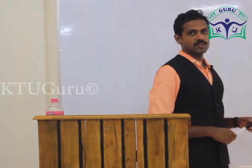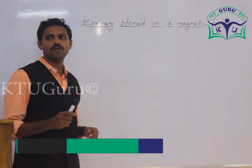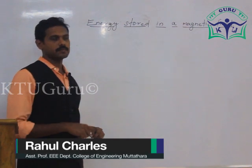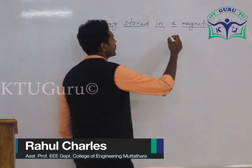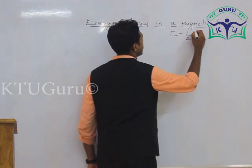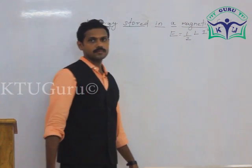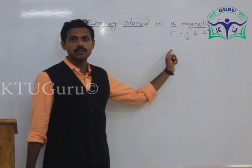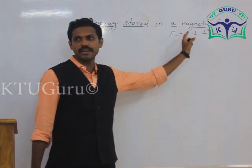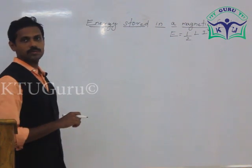Now, another important question: derive an expression for energy stored in a magnetic field. The relation E equal to half L I square is the expression for energy stored in the magnetic field, where L denotes the inductance and I is the current flowing through the magnetic circuit.